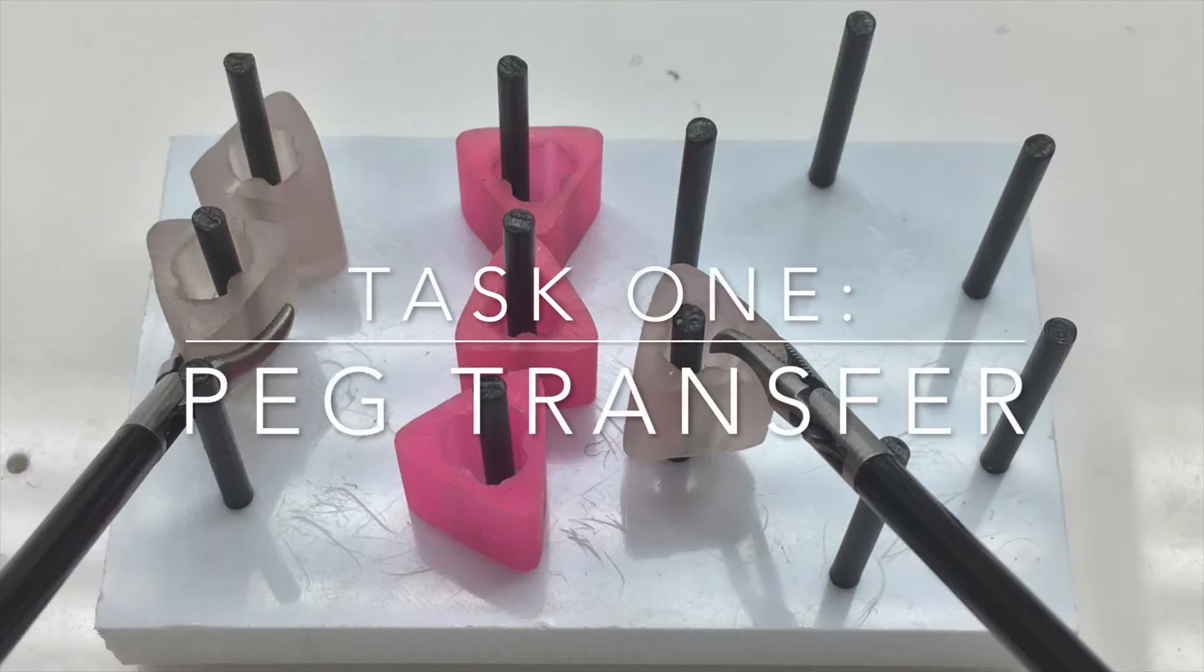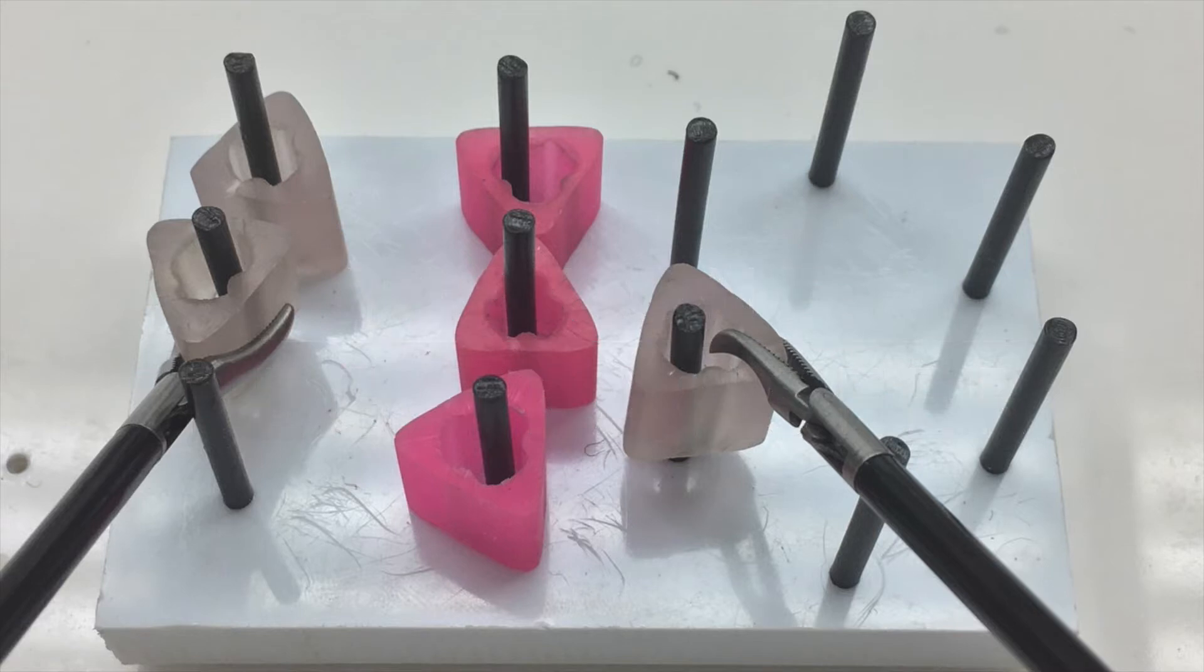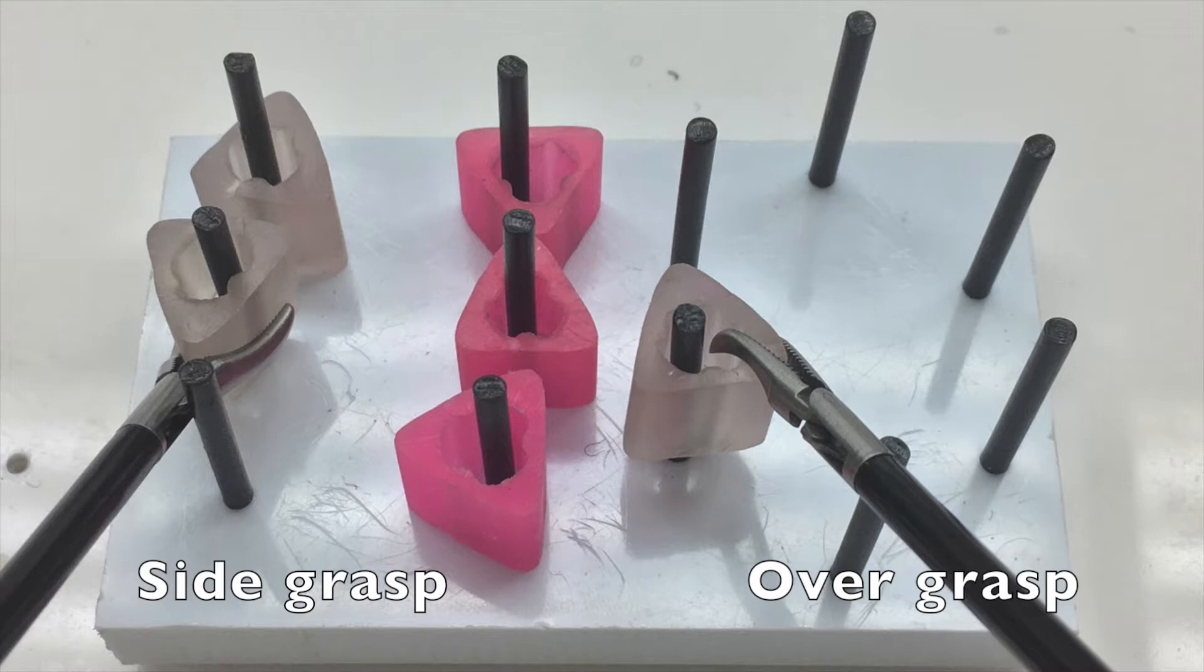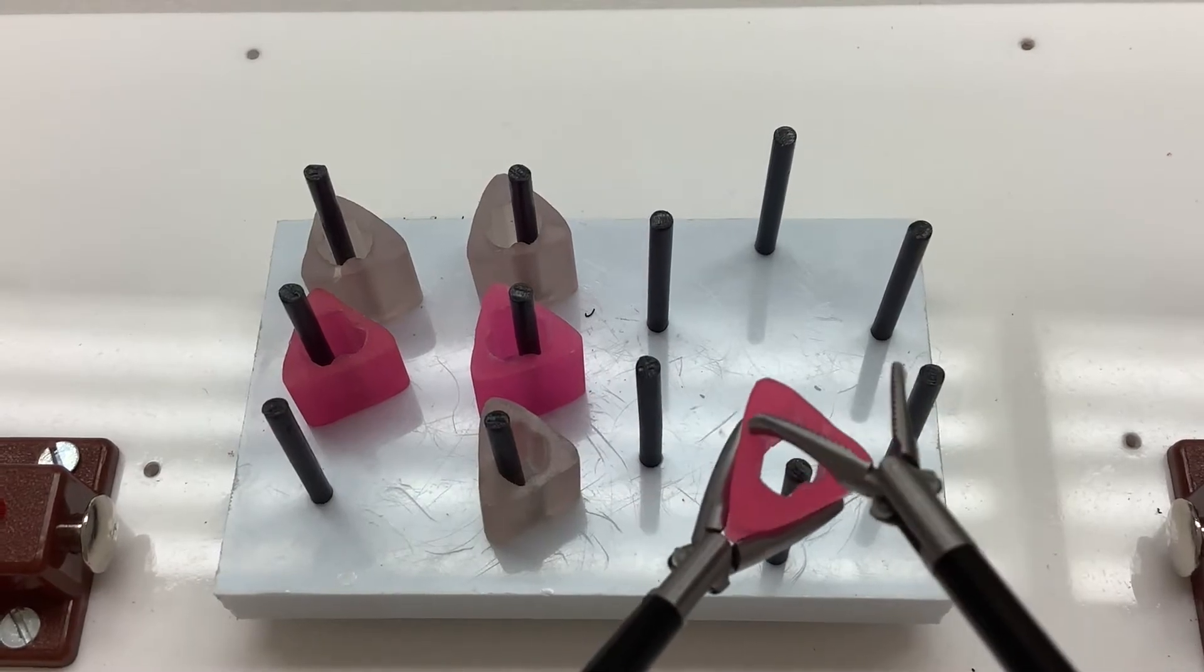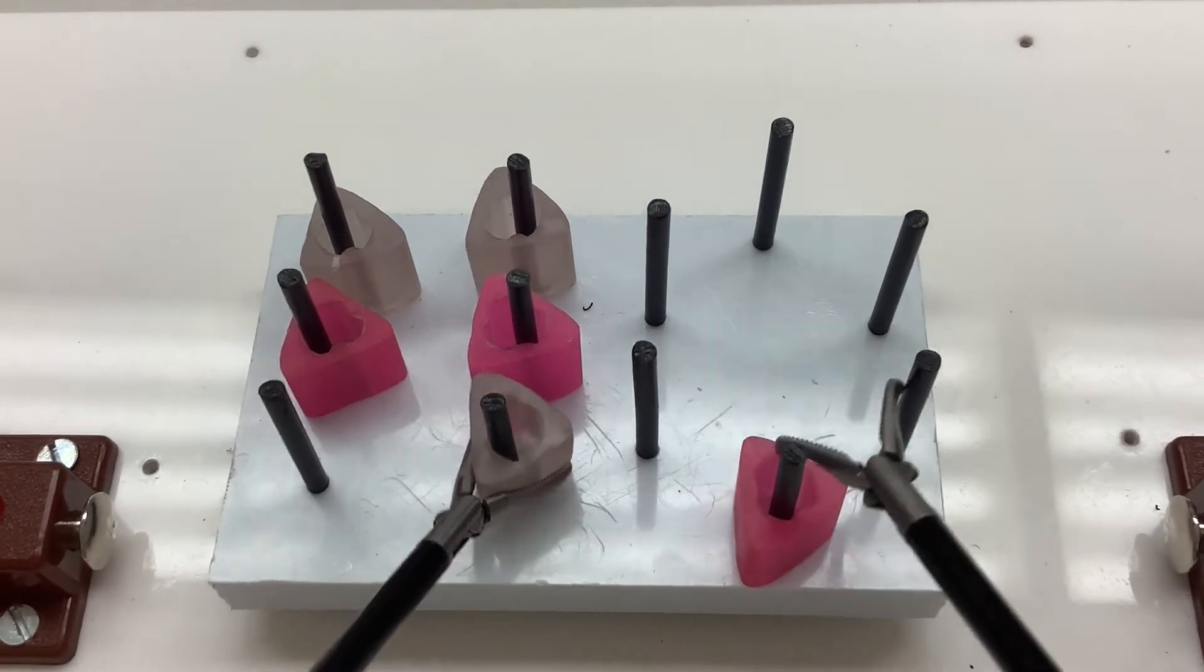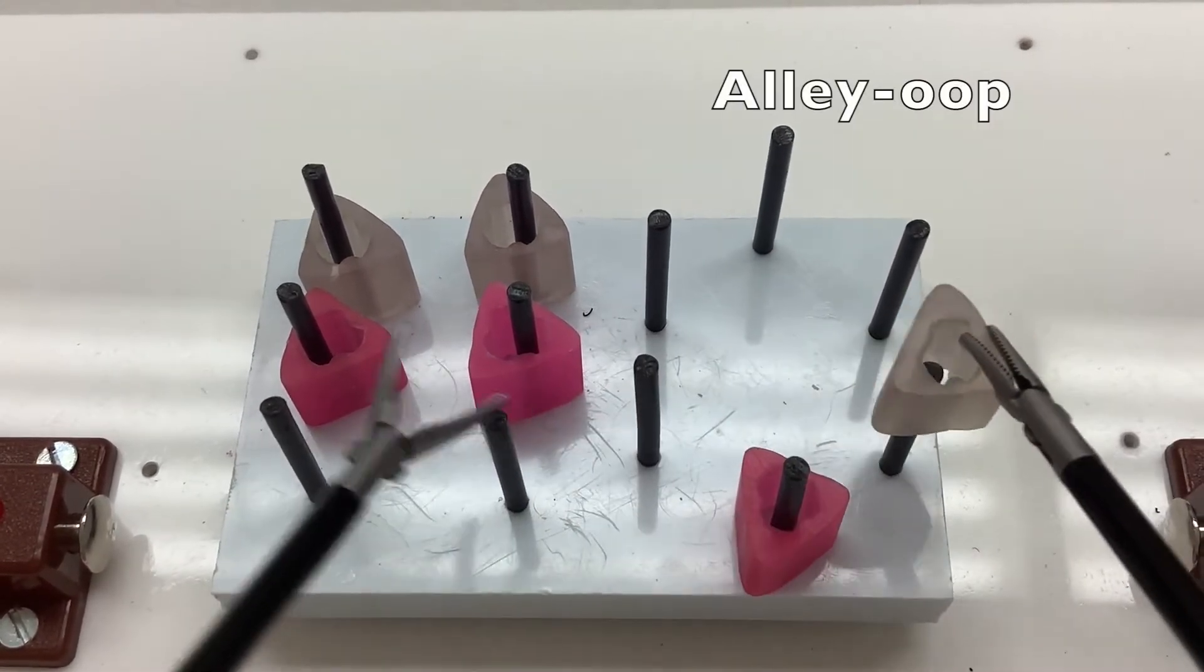Task 1, Peg Transfer. We recommend using a side grasp to pick up each object and an overhand grasp to receive and place the object onto the peg. We recommend passing the object directly over the target peg. We call this the alley-oop method.